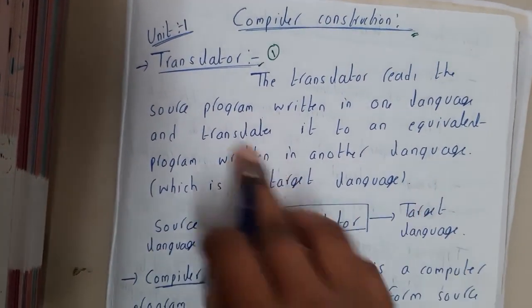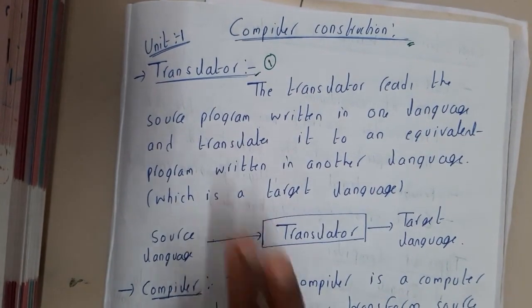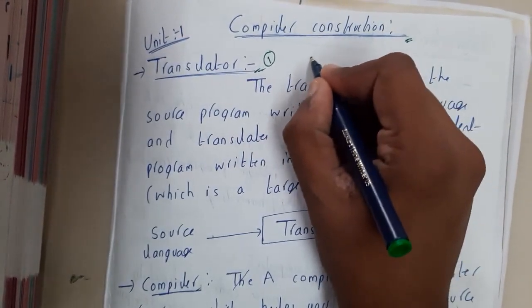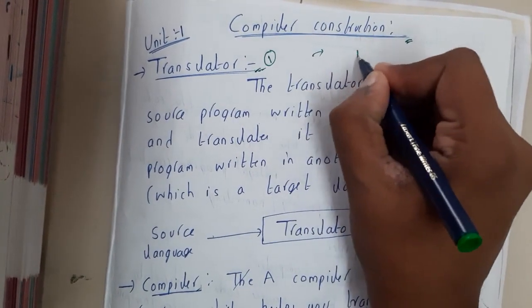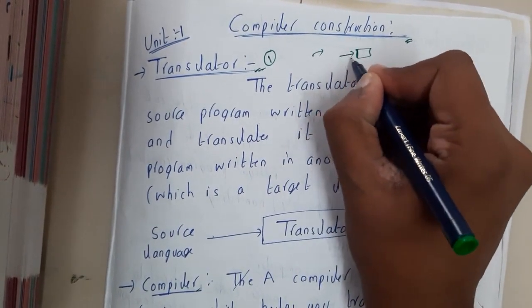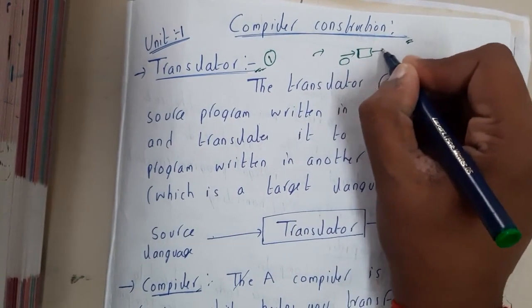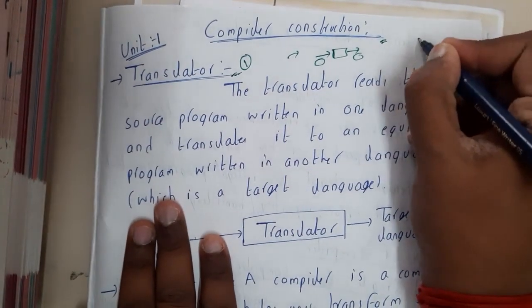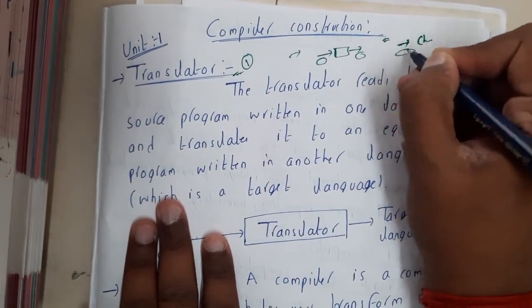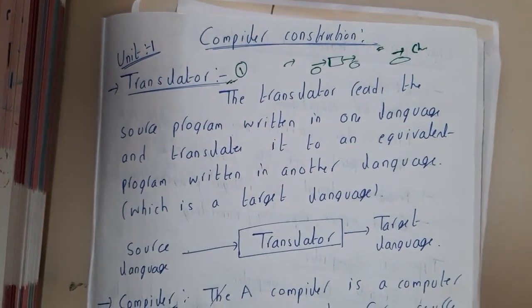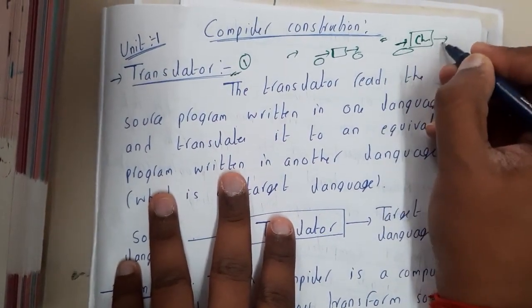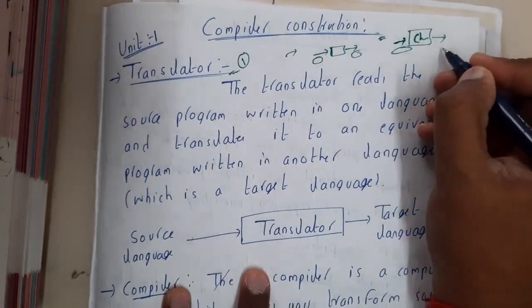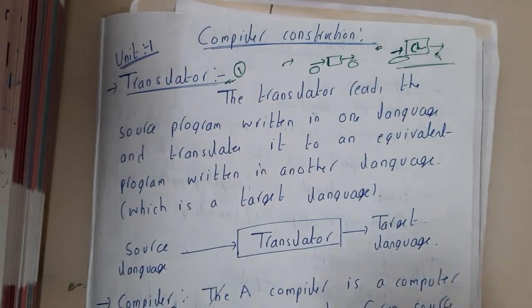So basically, first of all let us go through translator. In simple words, if you go to some other place you will be searching for a translator. He'll be taking an input of your language and giving the output in that particular region's language. Assume that you went to China — you'll be speaking your own language like English, Telugu, or Hindi, and a translator will be converting that into the Chinese language.